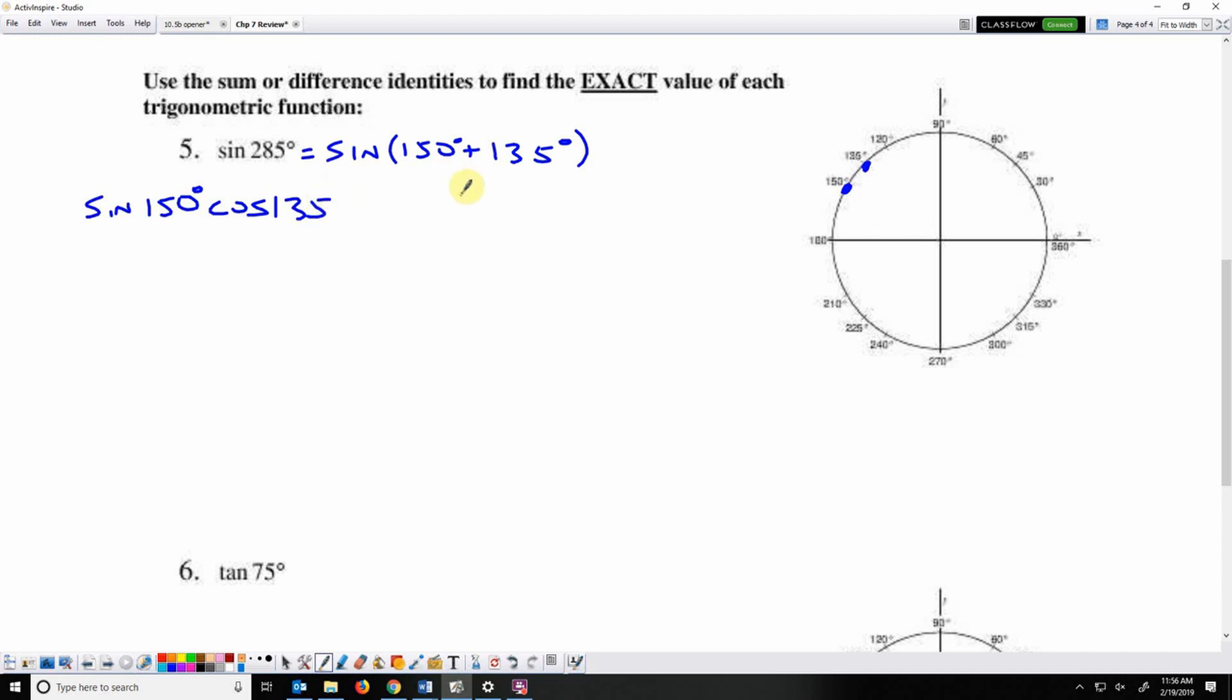Plus or minus, which means whatever sign I got here, I need to keep here. And then cosine 150 degrees times sine of 135 degrees.